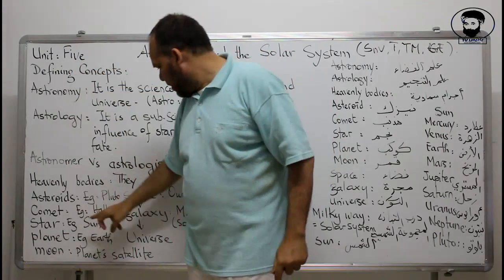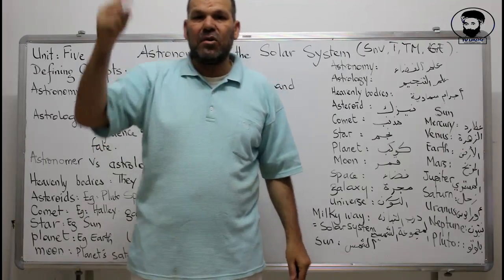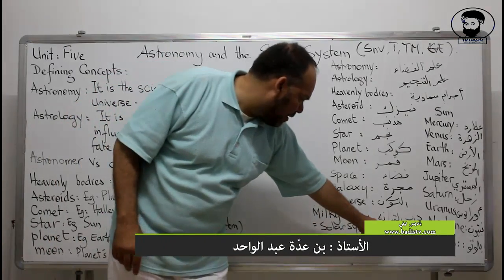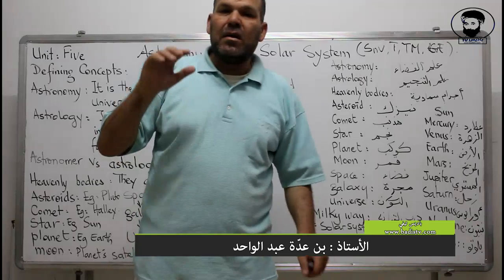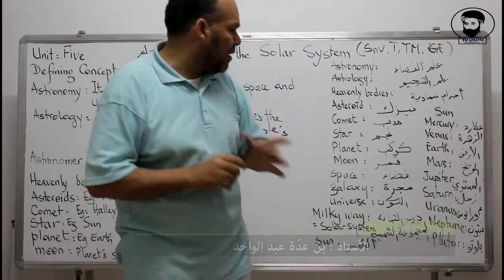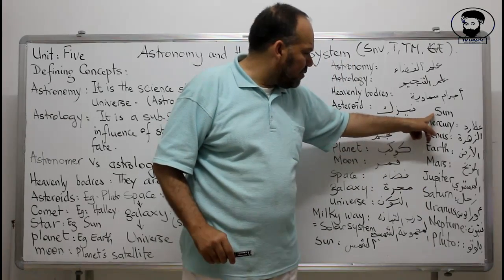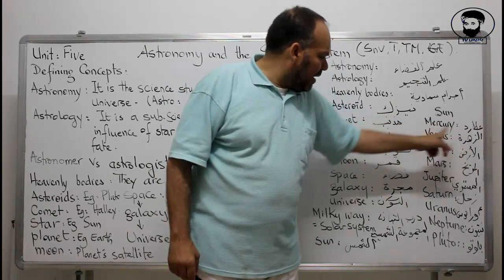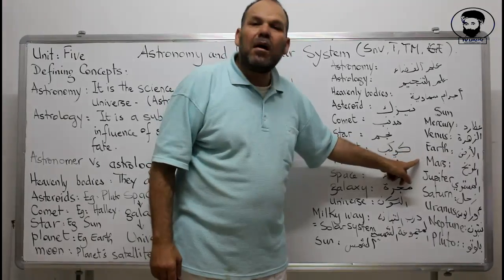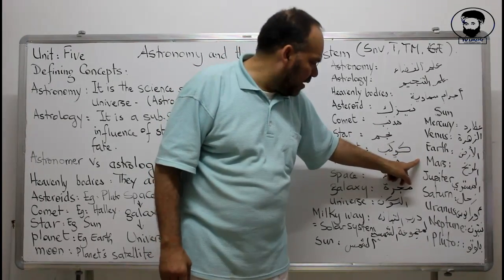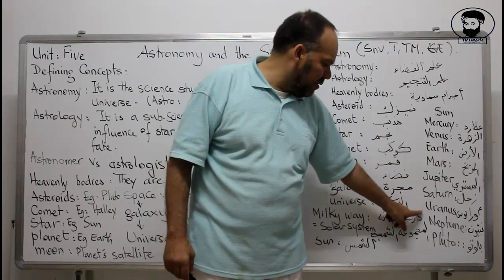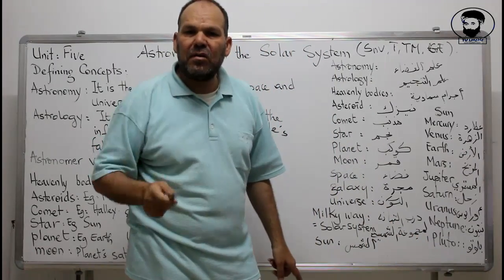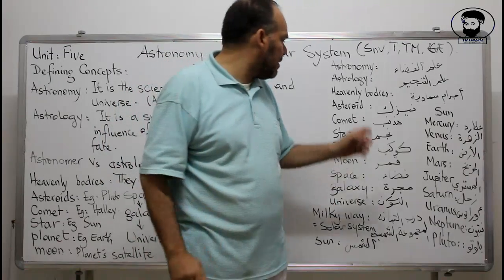The astronomers said that Pluto, in our solar system, is not a planet. In our solar system, there are not nine planets but only eight planets. The planets are, first, the star which is the sun, then Mercury, Venus, Earth, Mars, Jupiter, Saturn, Uranus, Neptune, and Pluto. In 2007, the astronomers found that Pluto is not a planet — it is just an asteroid, a big rock in space.